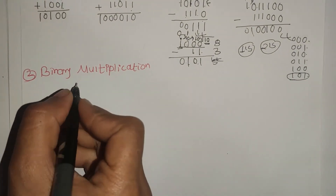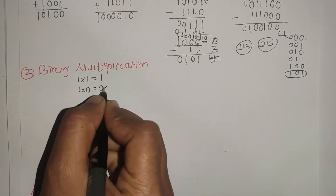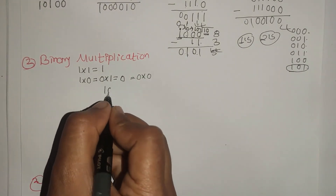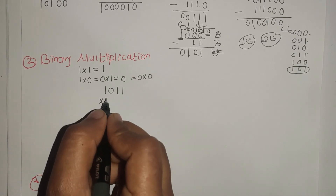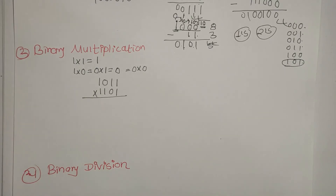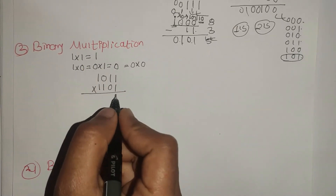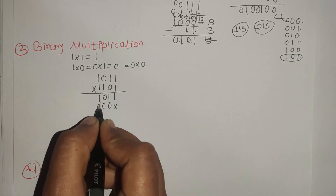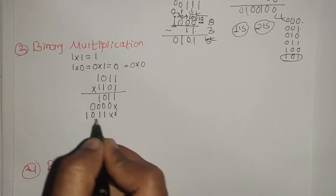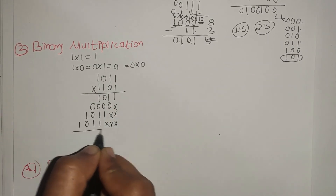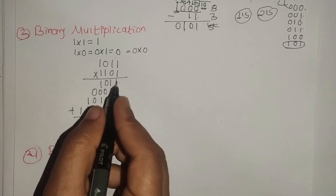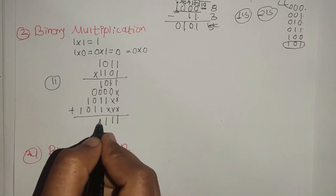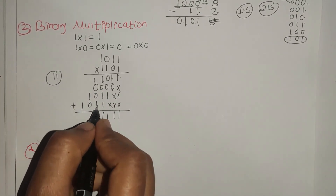Now, for binary multiplication, let's take 1 into 1101. The partial products are calculated. We get 10111 and 10111. We now need to perform binary addition on the partial products. 1, 1, 1, 0, 1 and 1, 1, 1, 0, 1. Adding with carry gives us the result 1110101100.